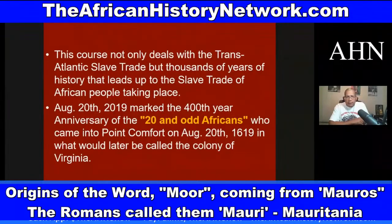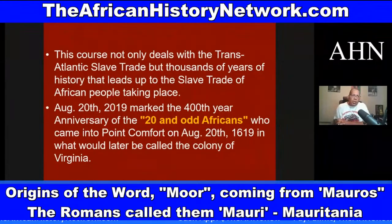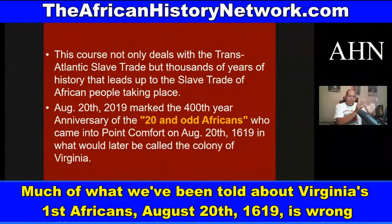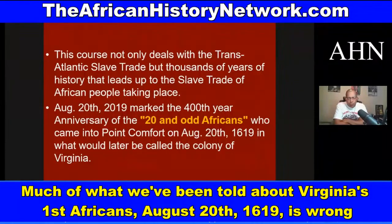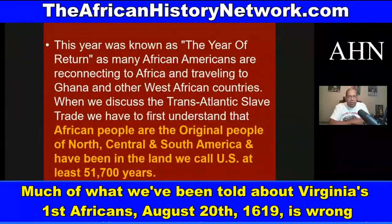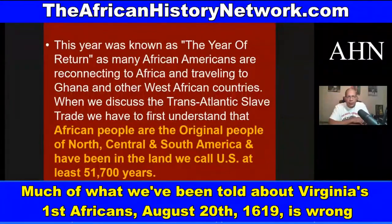August 20th, 2019 marked the 400th anniversary of the 29 Africans who came into Point Comfort on August 1619 on the White Lion pirate ship, which was an English pirate ship. These were Kimbundu-speaking people from present-day Angola, captured by the Portuguese slave ship San Juan Bautista, which had about 350 Africans on it. They were hijacked by two English pirate ships — the White Lion and the Treasurer — which came into Virginia in August 1619 at Point Comfort, which was Hampton, not Jamestown.